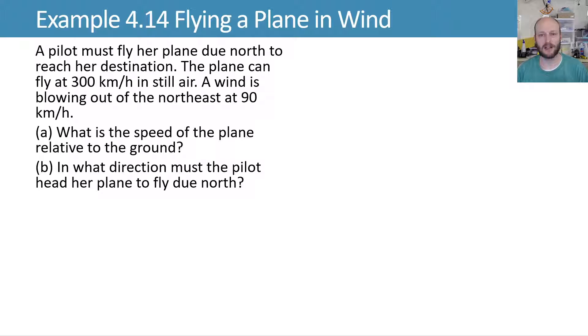Let's use relative motion to consider the flight of a plane. A pilot must fly her plane due north to reach her destination. We have some information about how the plane can fly in still air, and a wind is blowing out of the northeast at 90 kilometers per hour.